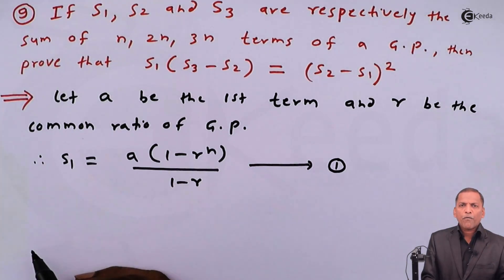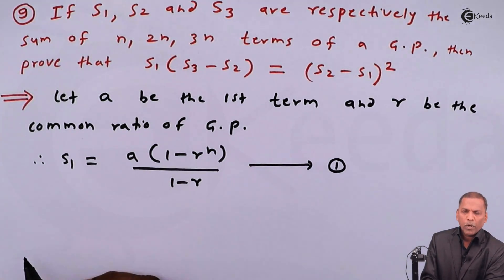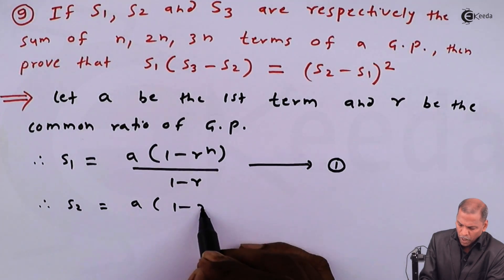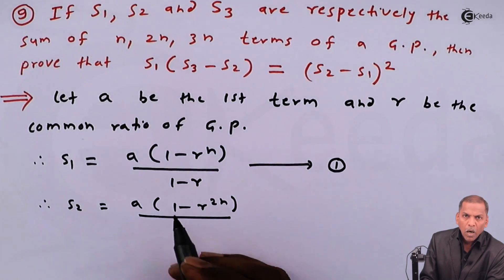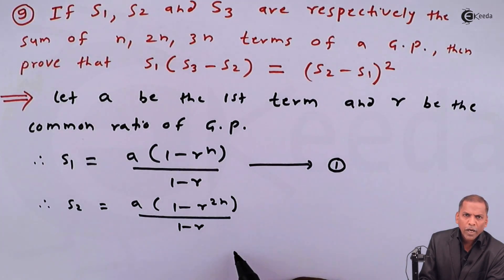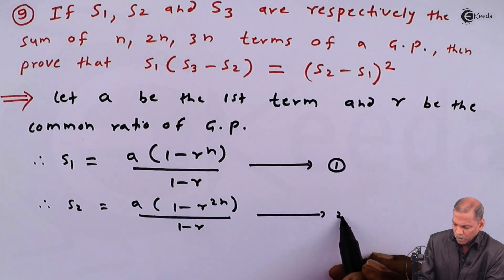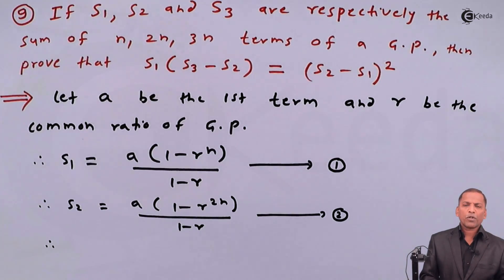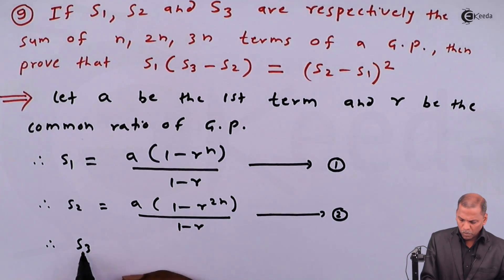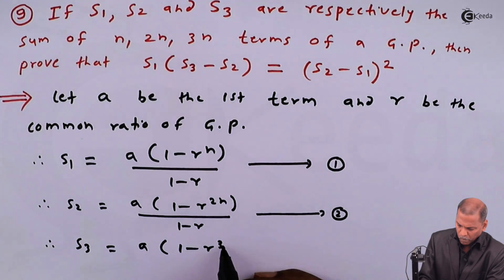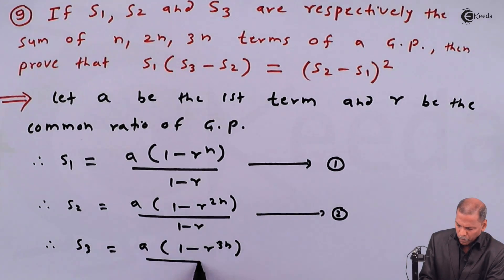S₂ represents the sum of the first 2n terms of a GP. Therefore S₂ is equal to a times (1 - r²ⁿ) divided by (1 - r). Similarly, S₃ represents the sum of the first 3n terms of a GP. Therefore S₃ is equal to a times (1 - r³ⁿ) divided by (1 - r).